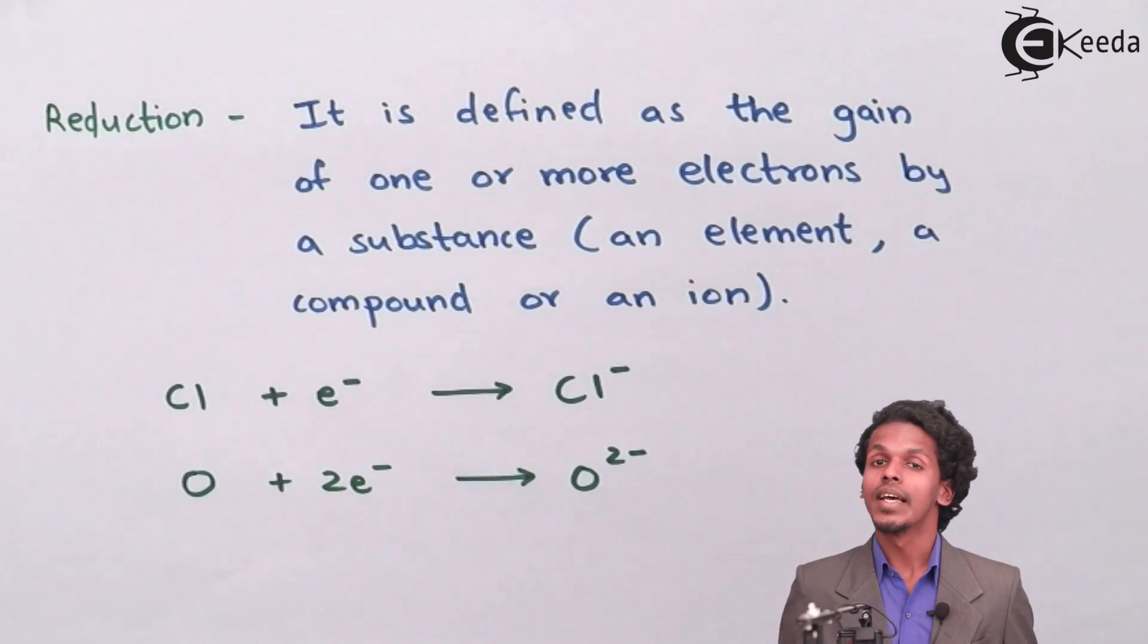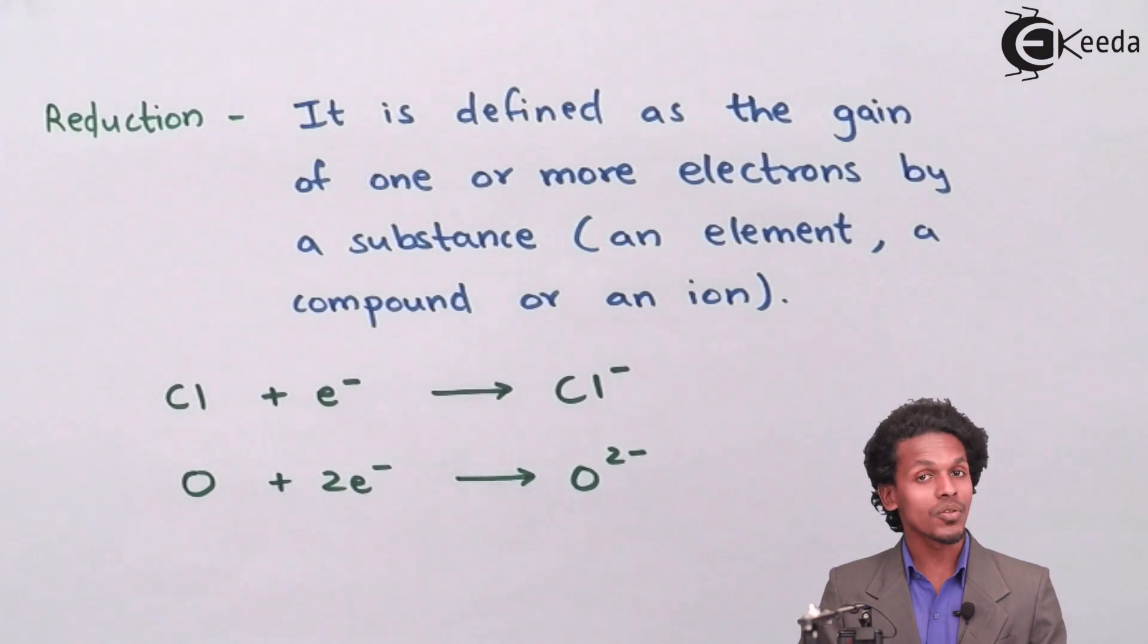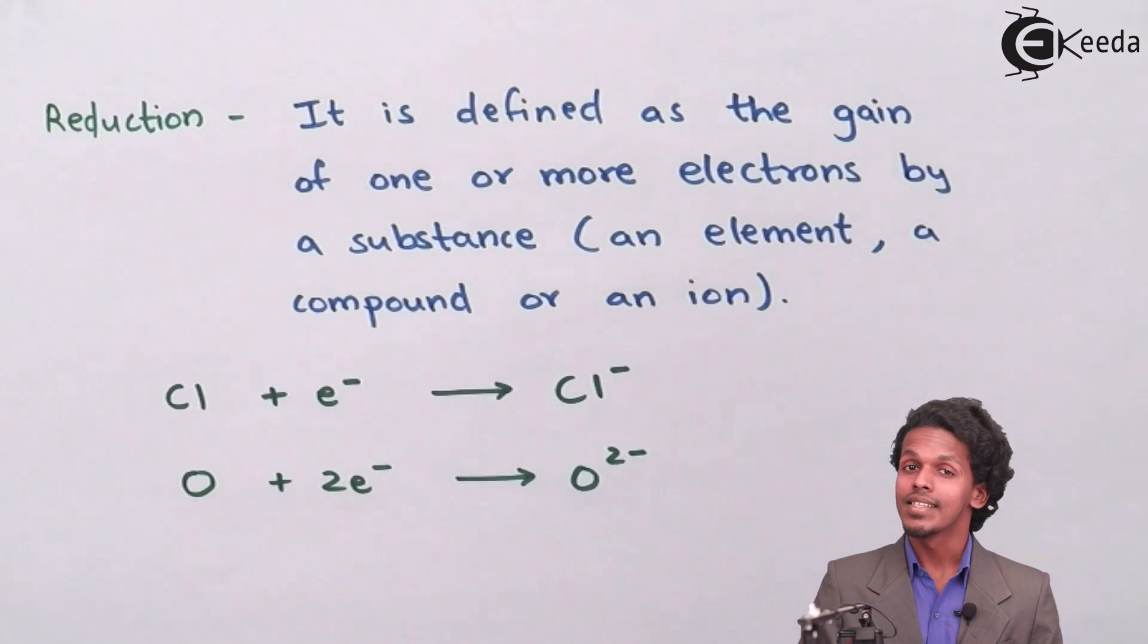So this was an example of reduction. Based on these factors, we are going to see what is redox reaction, and because of that, a redox reaction consists of reduction as well as oxidation within the same reaction itself, which occurs simultaneously.